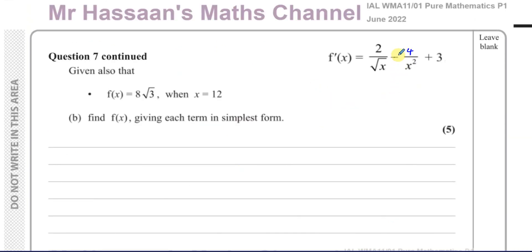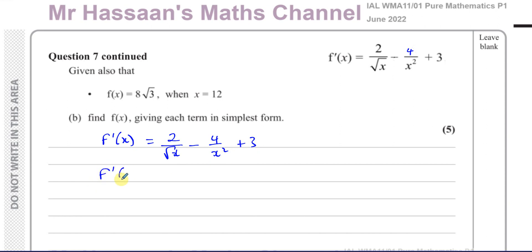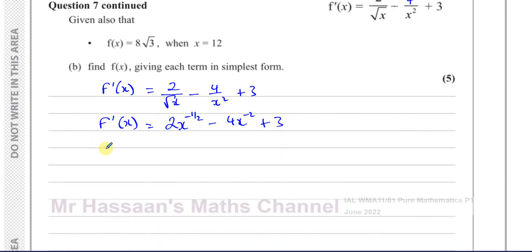Now for part B. We know F'(x) is 2 over root X minus 4 over X squared plus 3. The question says, given that F(x) equals 8 root 3 when X equals 12, find F(x). To find F(x) from F'(x), I have to do the opposite of differentiating — I have to integrate. Going from F(x) to F'(x) is differentiating; going the other way is integrating.